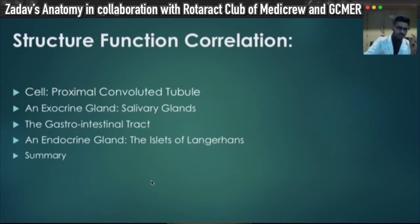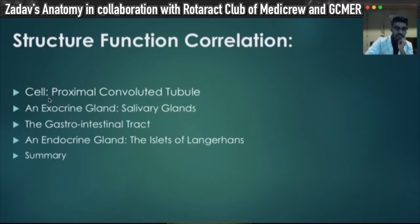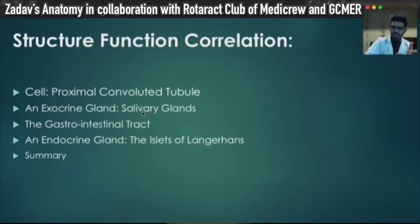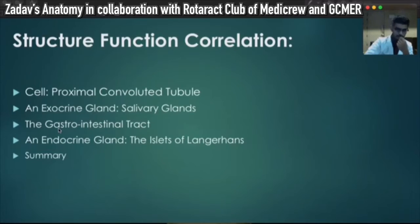Now I'm going to talk about four examples where structure-function correlation can be used very well. The first is the cell of the proximal convoluted tubule. Then an exocrine gland — the typical structure of an exocrine gland and the difference between a mucous and a serous salivary gland. Then the schema of the gastrointestinal tract. Finally, an endocrine gland — the islets of Langerhans in the pancreas.